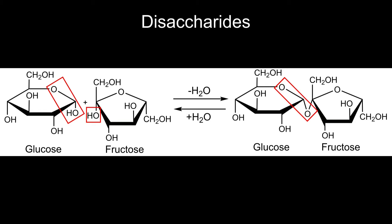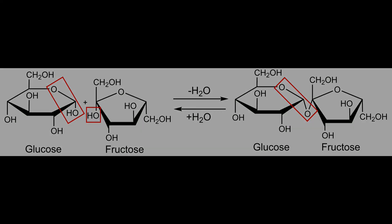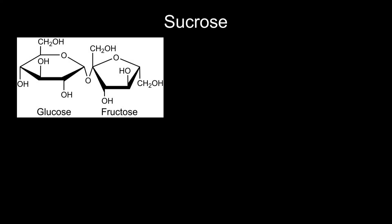Disaccharides are also called double sugars and are made of two monosaccharides. The most common disaccharide is sucrose, which is also called household sugar.